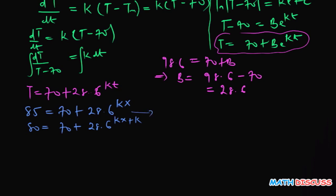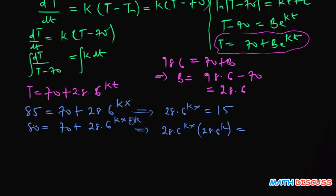From condition 1: 85 − 70 = 15, so 28.6e^(kX) = 15. From condition 2: 80 − 70 = 10, so 28.6e^(kX) · e^k = 10. So how do we solve this system?